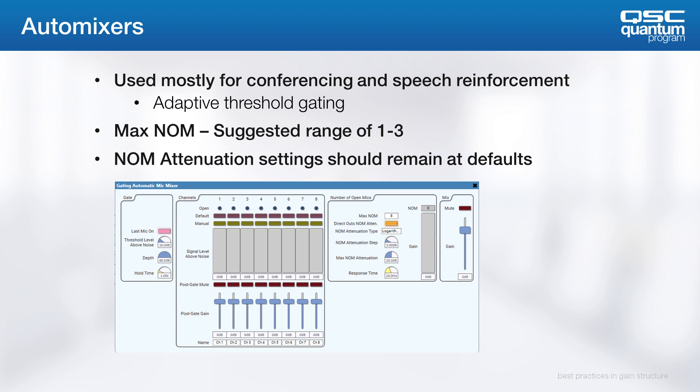We suggest that the maximum number of microphones, or max-nom, be between one and three, which makes sense if you think about it. You need one mic for the guy that's talking, another mic to argue with the first guy, and a third mic to tell the other two guys that they're both loudmouth jerks, right?